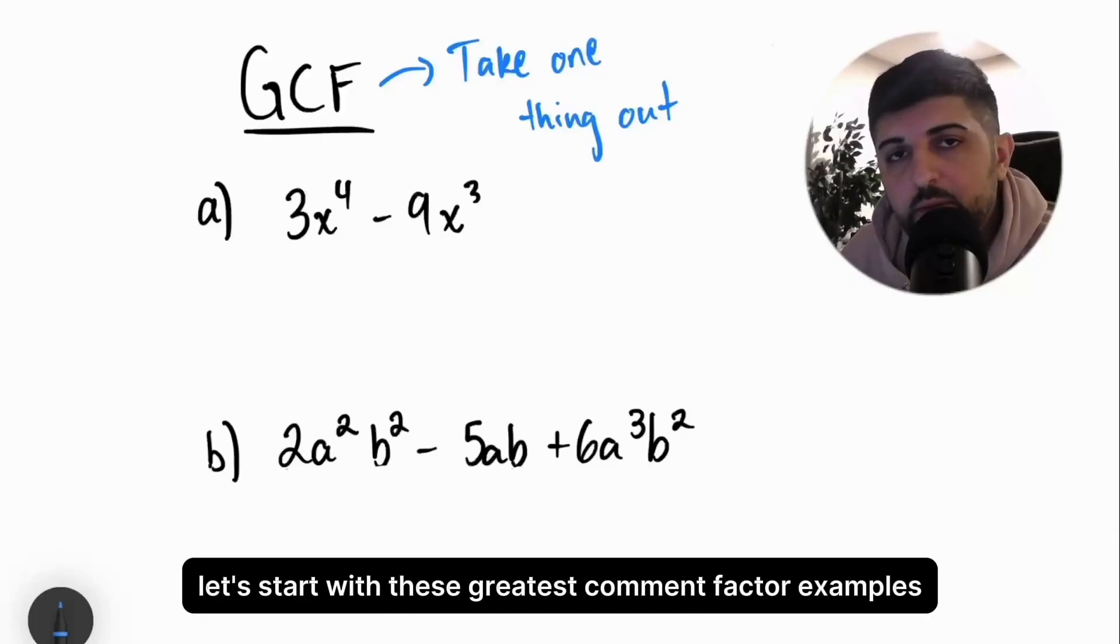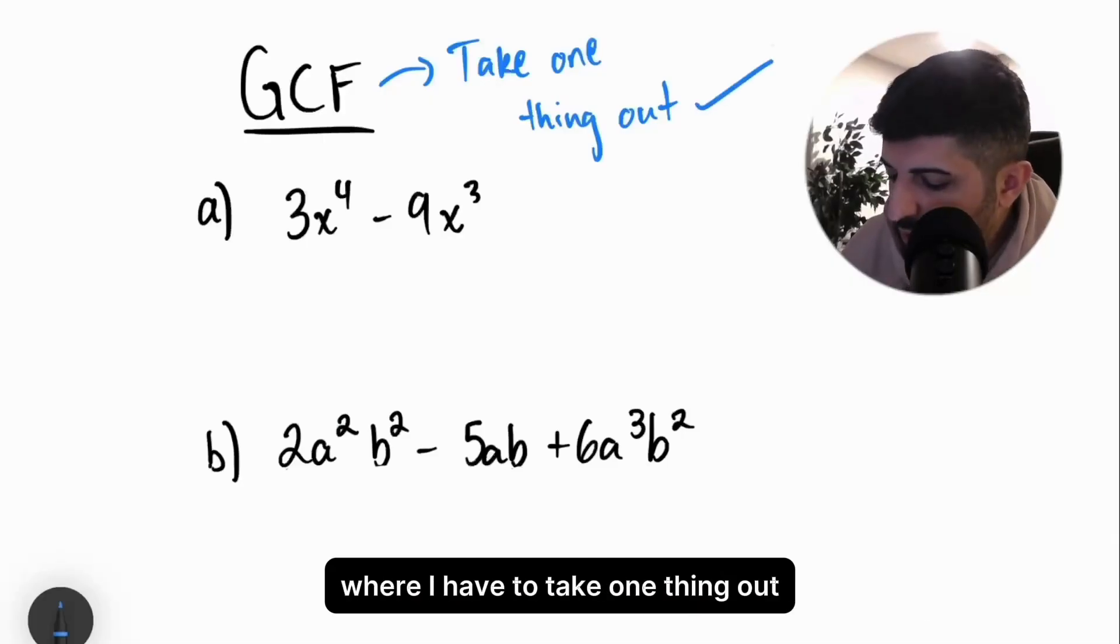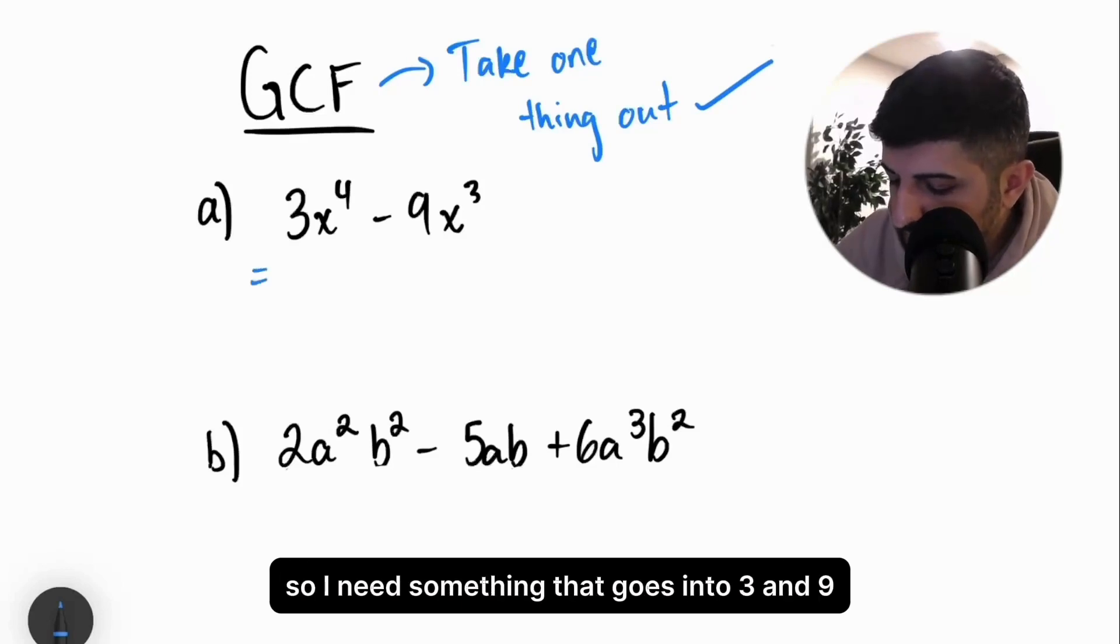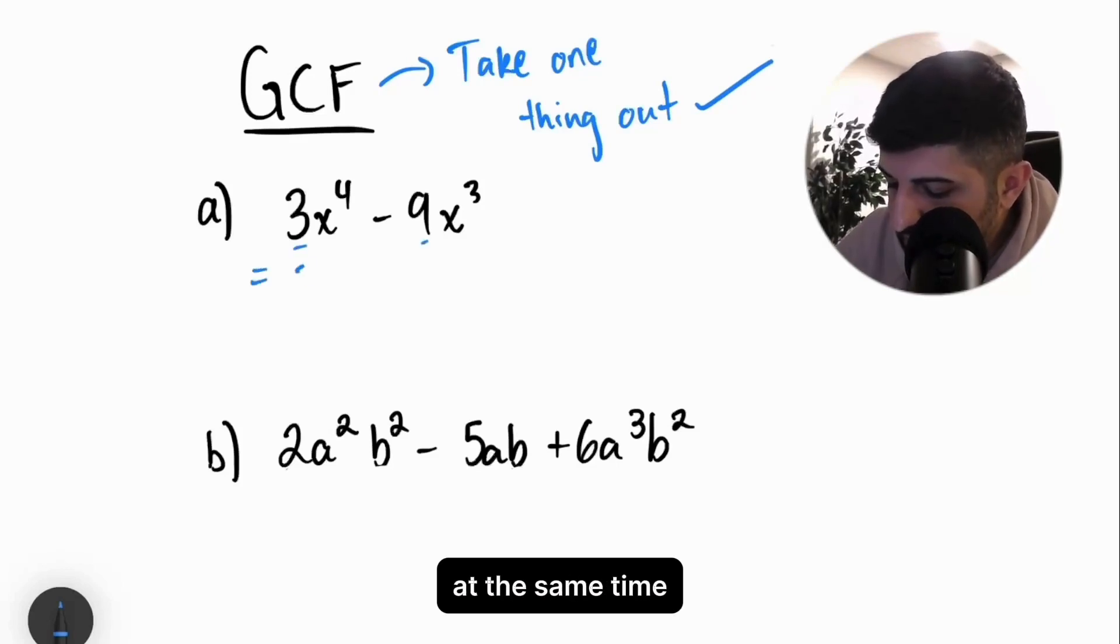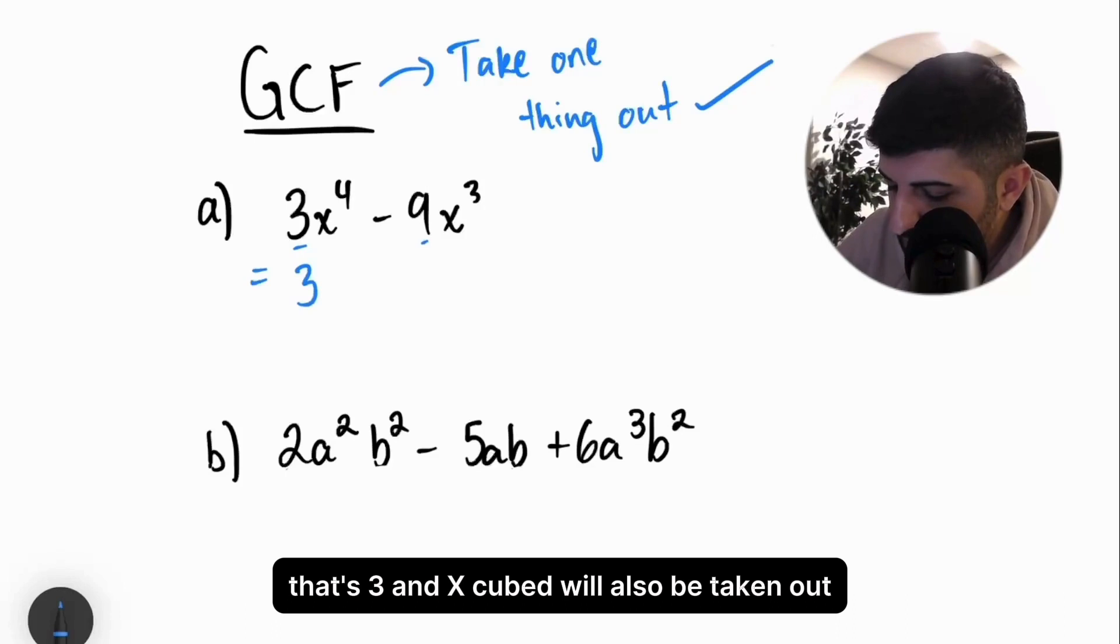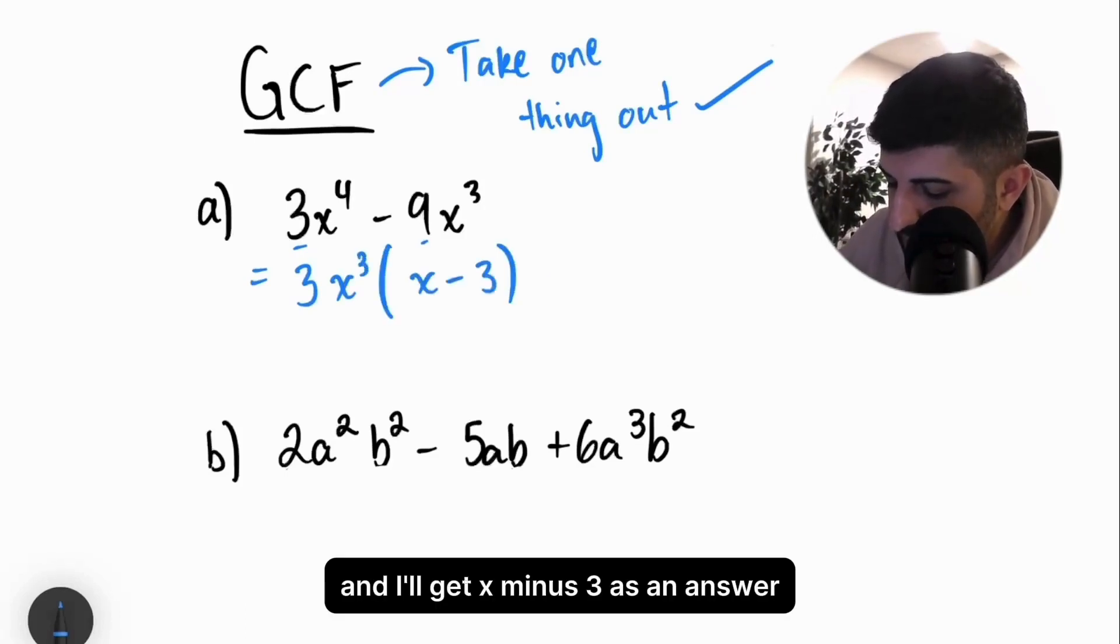Let's start with these greatest common factor examples, where I have to take one thing out. I need something that goes into 3 and 9 at the same time, that's 3, and x cubed will also be taken out, and I'll get x minus 3 as an answer.